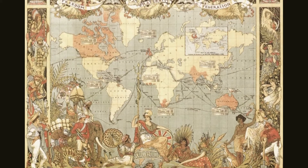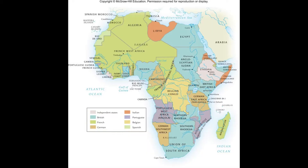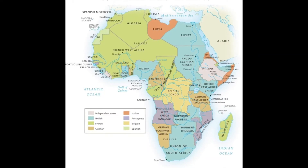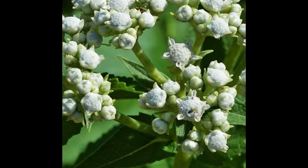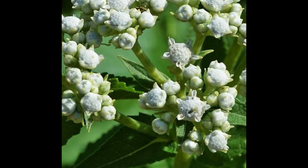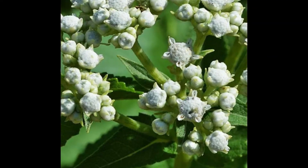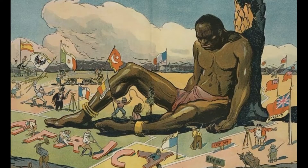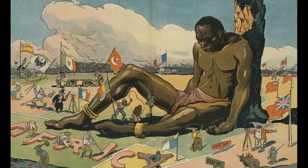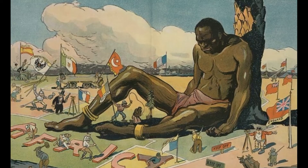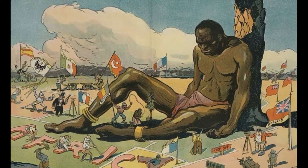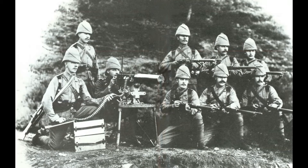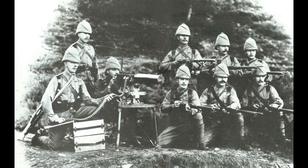Then several important developments occurred that solidified the power of the British Empire and other European empires in Africa. First, effective treatments for tropical diseases — such as the use of quinine to suppress the symptoms of malaria — became more widespread. Second, the Berlin Conference of 1885 divided Africa between European powers, preventing accidental wars. And third, the use of modern weaponry became more widespread.